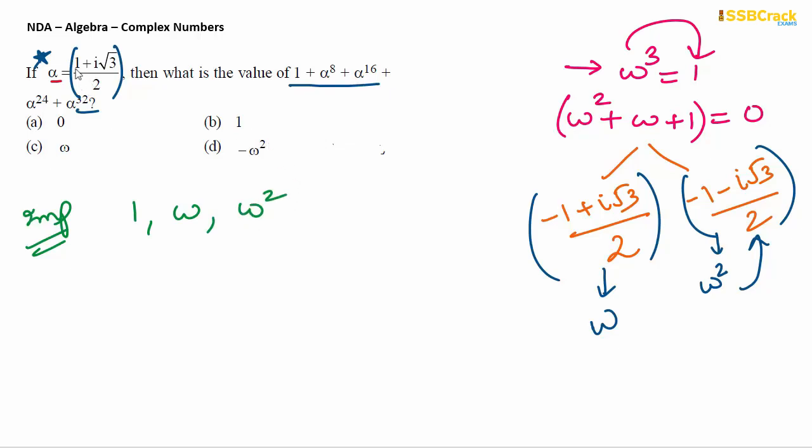Now here 1 plus i root 3 by 2 is given, which matches with omega square if we take minus common. So we can take alpha's value as minus omega square. From this, finding the value becomes easier. We write 1 plus alpha raise to 8 plus alpha raise to 16 plus alpha raise to 24 plus alpha raise to 32, which equals 1 plus omega raise to 16 plus omega raise to 32 plus omega raise to 48 plus omega raise to 64.